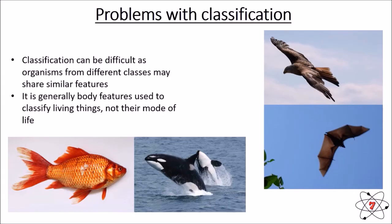We can also see a bird of prey and a bat — both have wings. However, a bat is not a bird, because if we look closely at its wings there are no feathers, just flaps of skin. A bat will also give birth to live young and feed its young milk, which a bird will not do — a bird lays an egg and does not feed its young milk. So we need to look at the body features carefully in order to classify things, because there are some organisms that are not easy to classify.